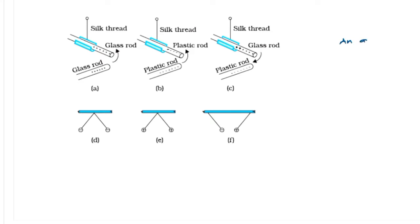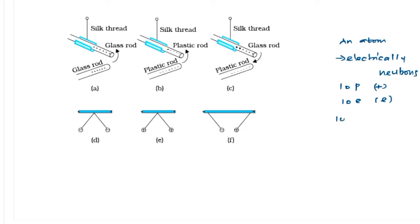Generally we know an atom is electrically neutral. Why electrically neutral? The reason is the number of protons equals the number of electrons. If you have 10 protons in an atom, you will definitely have 10 electrons. Proton is positive charge and electron is negative charge, so 10 positive plus 10 negative together gives you zero. So an atom is electrically neutral. Naturally we have two types of charges: positive charge and negative charge.